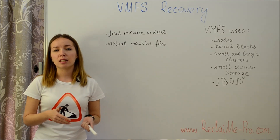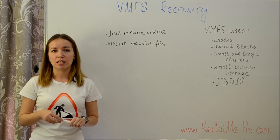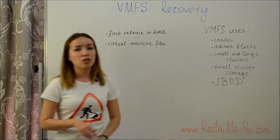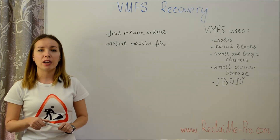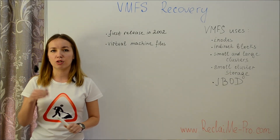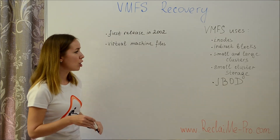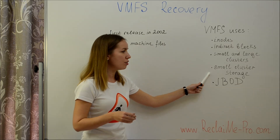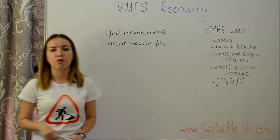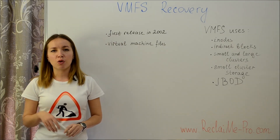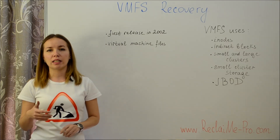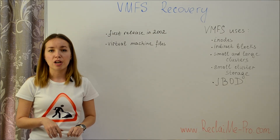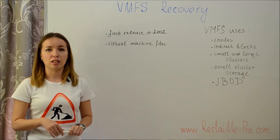VMFS, similarly to the ext file system, uses inodes and indirect blocks. Also, similarly to Microsoft Structured Storage, VMFS uses two different cluster sizes and a dedicated repository for small files. For very small files smaller than 1 KB, the data is stored inside the corresponding inodes, like resident files in NTFS.